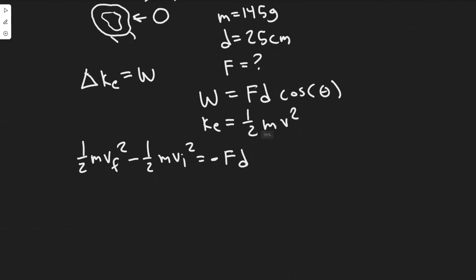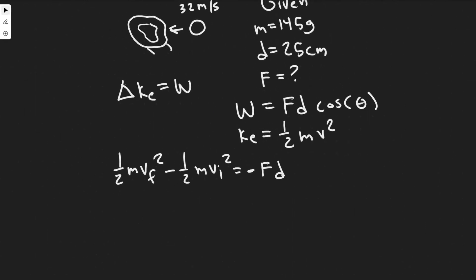And you'll see that these negative signs are going to cancel. Because the final velocity of the ball in this problem, we know is zero, because it's going to be stopped. Once it catches in the glove back 25 centimeters, it's going to be stopped. So we know this v final value is zero, meaning this whole term right here becomes zero. So we have minus one half m v initial squared equals minus FD.